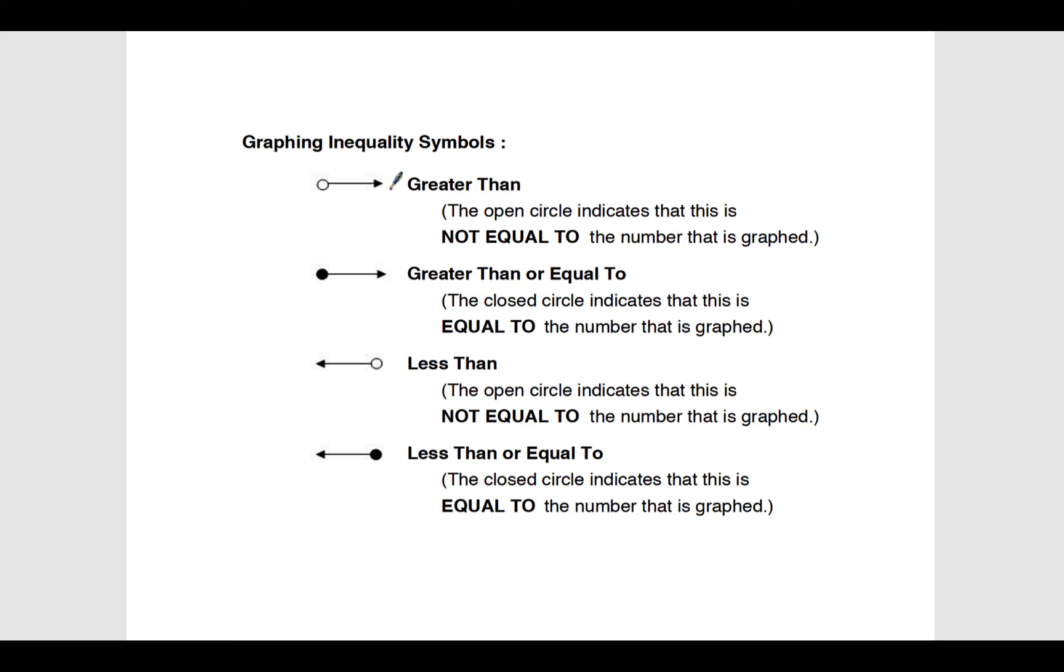Then the line will be shaded in either to the right or to the left. If it's shaded to the right and the circle is not filled in, it's just going to be greater than. If the circle is filled in, it will be greater than or equal to.